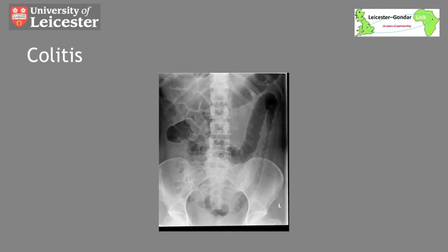The changes seen in colitis are the same for both infective and inflammatory causes of colitis. In this x-ray you can see thickening of the left colon — a thick white line running along the side of the bowel lumen, which is oedema in the colonic wall. You can see that this continues into the transverse colon which has dipped down into the middle of the abdomen.